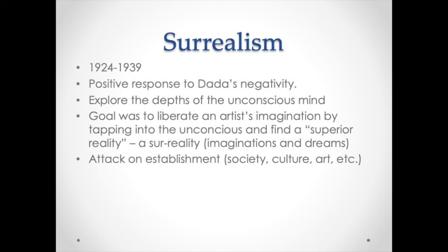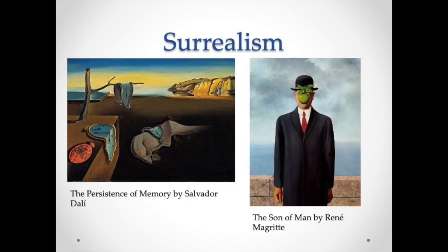The surrealists were rebelling against the dada people, because dada had a lot of negativity about society. The surrealists wanted to explore the unconscious mind — their goal was to liberate an artist's imagination by tapping into the unconscious and finding a superior reality, or surreality — that's where they get the name. They also wanted to attack establishment society, culture, and art. The two images I chose both have a dream-like effect, including the Dalí piece with the melting watches — examples of surrealistic art.